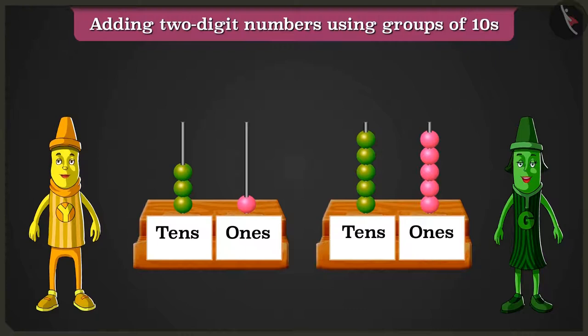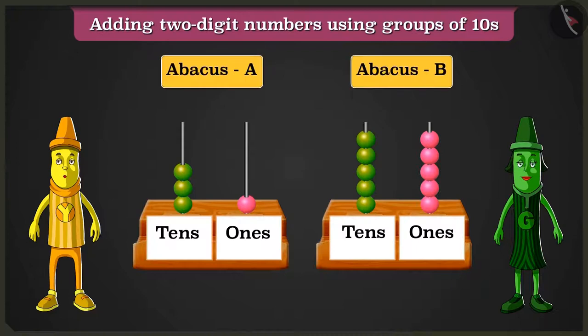Well done, Greeny. Hey Yellow, what is this? That is an abacus. Let us look at another example.